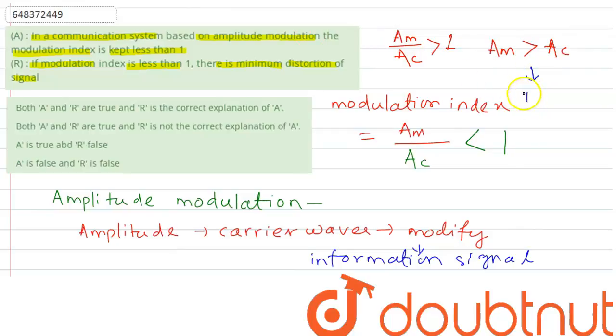So due to this, there is an interference caused between the information amplitude and the carrier amplitude signal. So both when they get interfered, the signal gets distorted.